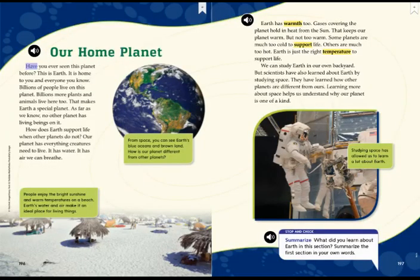Our home planet. Have you ever seen this planet before? This is Earth. It is home to you and everyone you know. Billions of people live on this planet. Billions more plants and animals live here too. That makes Earth a special planet. As far as we know, no other planet has living beings on it. How does Earth support life when other planets do not? Our planet has everything creatures need to live. It has water. It has air we can breathe. People enjoy the bright sunshine and warm temperatures on a beach. Earth's water and air make it an ideal place for living things.